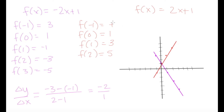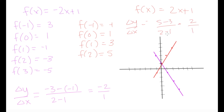Now let's confirm that our red graph has a slope of 2. Taking two points — x1, y1 and x2, y2 — our change in y is 5 minus 3 equals 2, and our change in x is 2 minus 1 equals 1. So our slope is 2 over 1, which is 2. We've confirmed that our slope is 2, consistent with m equals 2 in our formula.